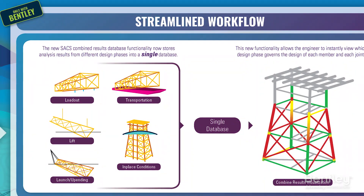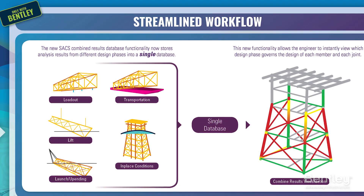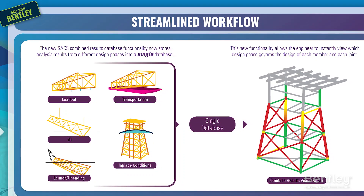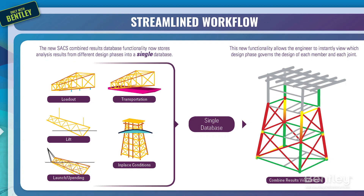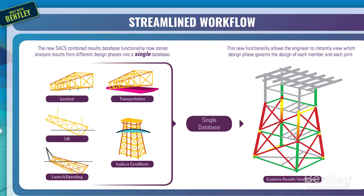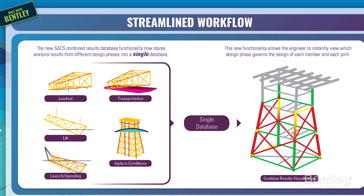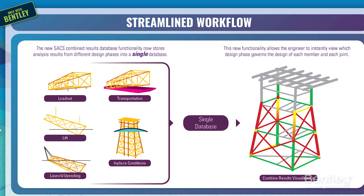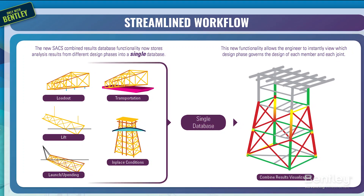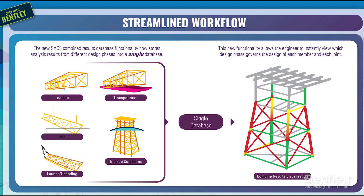The new SACS Combined Results database functionality now stores analysis results from all the different design phases into a single database, which can be reviewed graphically or numerically. This new functionality allows the engineer to instantly view which design phase governs the design of each member and each joint.